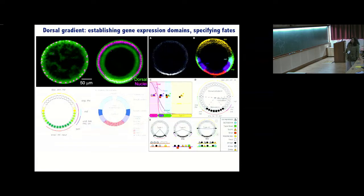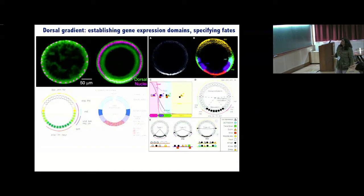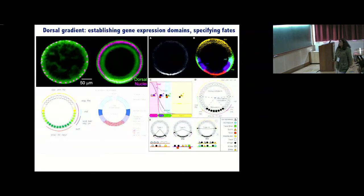Along the dorsal-ventral axis you define fields of cells with specific fate: the neurogenic ectoderm flanks the mesoderm, the lateral ectoderm forms further up dorsally, and the dorsal ectoderm forms at the top. In addition to these fates being specified, you have spatially restricted gene expression patterns along this axis — for example, snail is restricted to the ventral-most region, others are expressed more laterally, and still others are expressed dorsally.